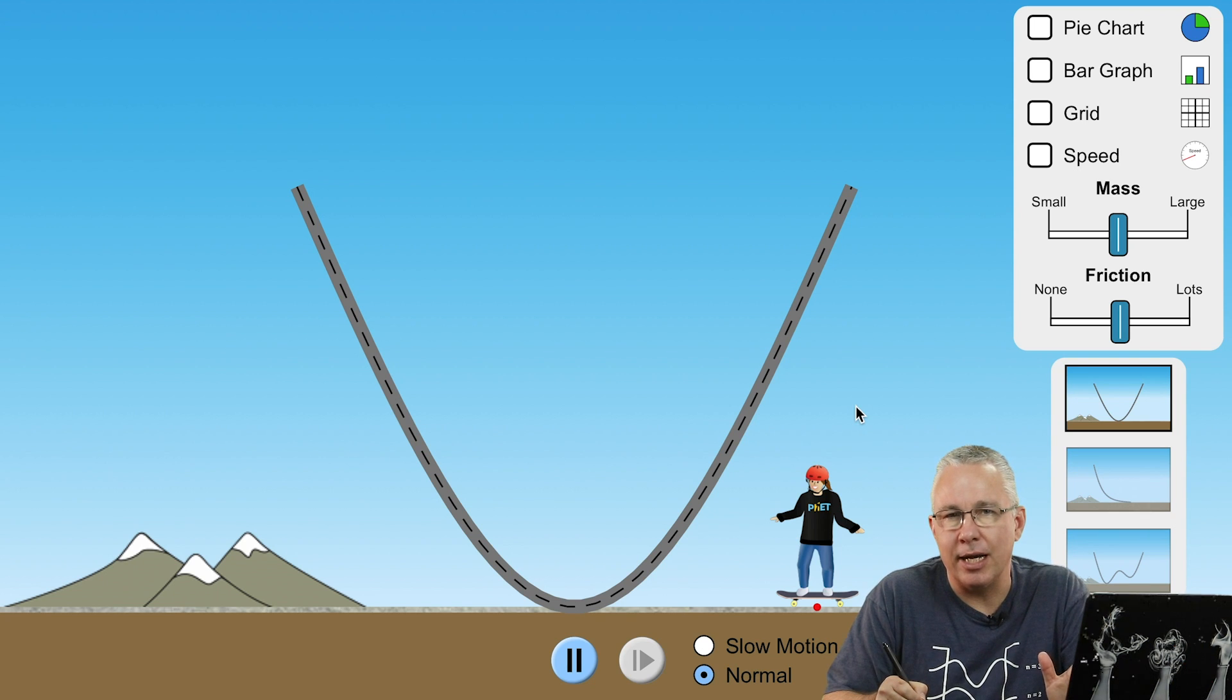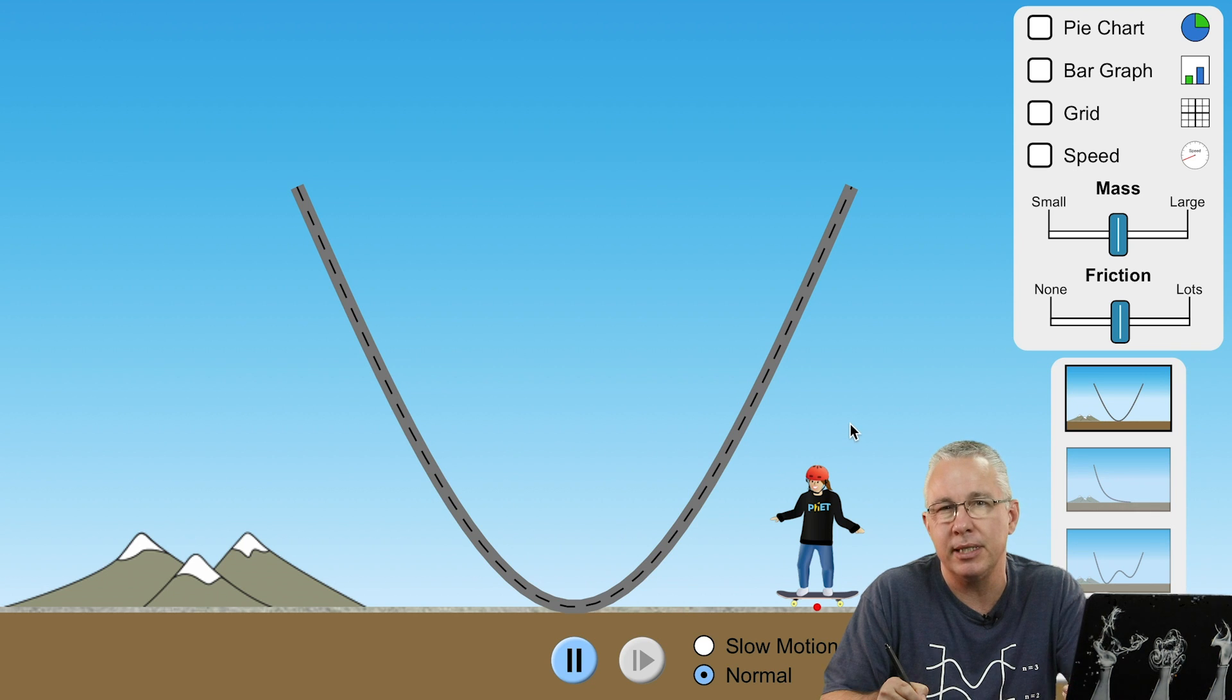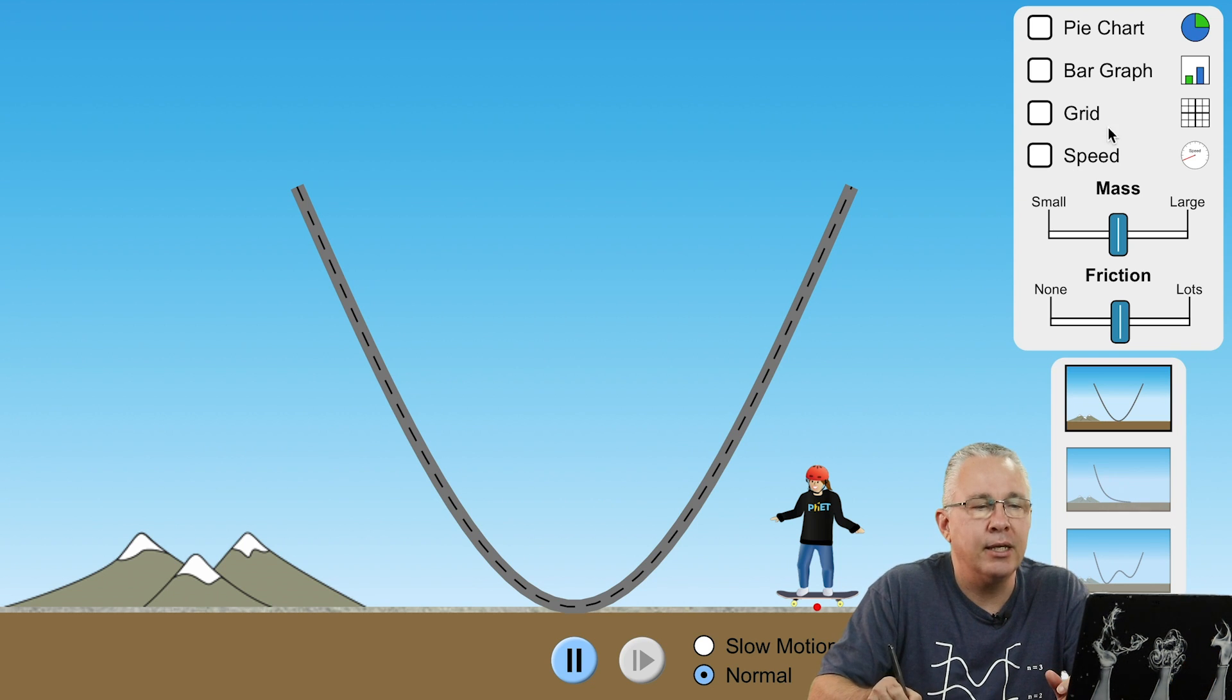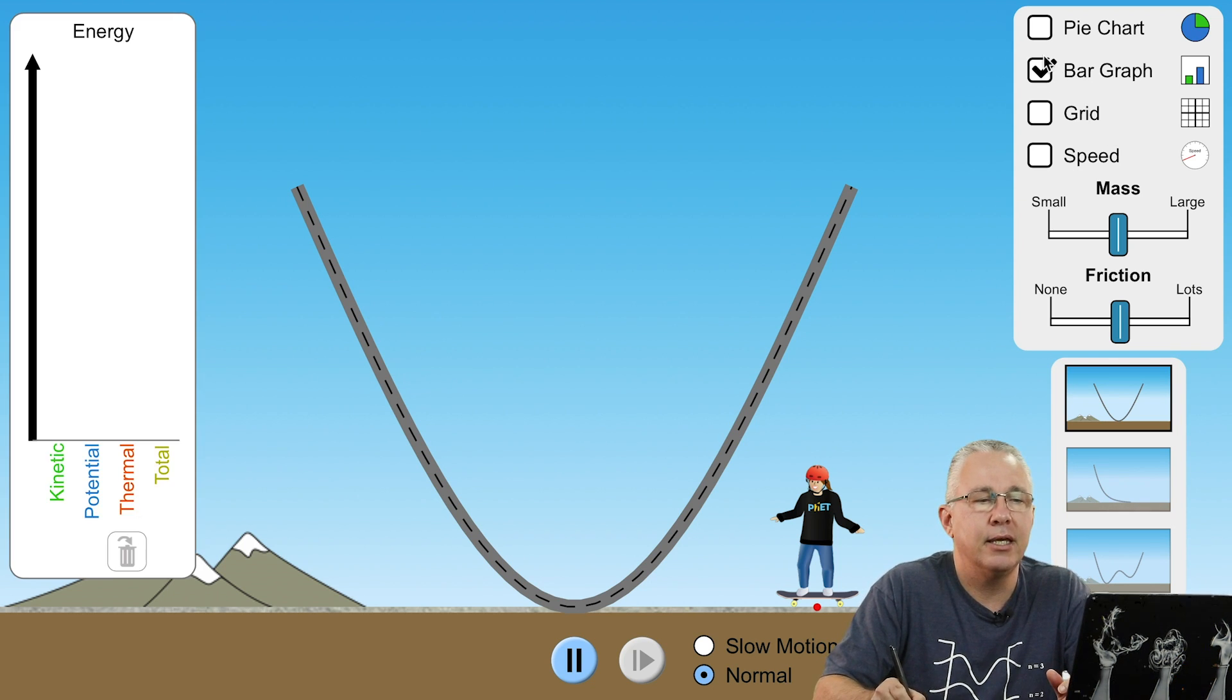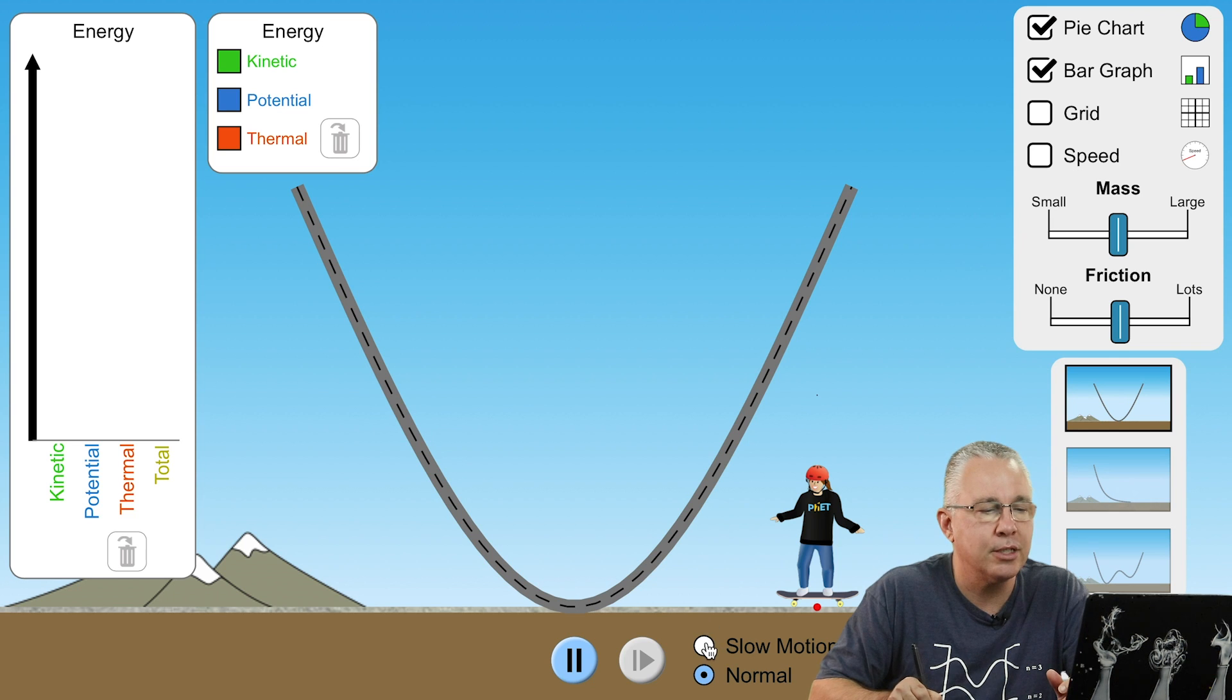So now let's have a look at a more realistic situation where we have some friction involved. In other words, in this case our skater is moving backwards and forwards but we're losing a little bit of energy in terms of heat or thermal energy. And of course this could also mean sound. If you were to have audio on for this you would hear the wheels roll across the ramps. Again we'll place our bar graph in there and our pie chart and put this on slow motion.